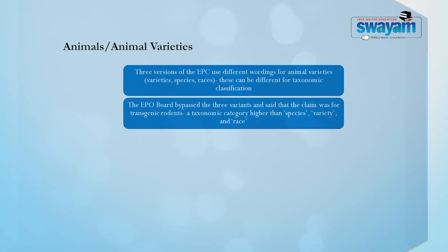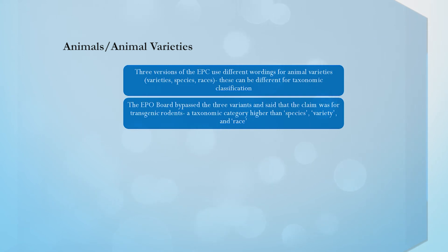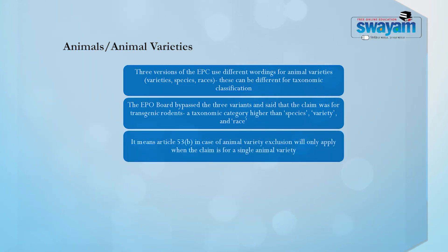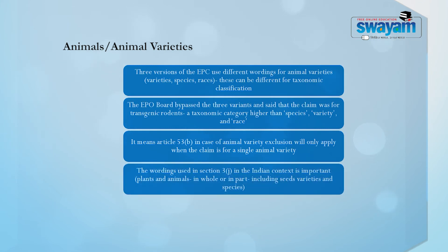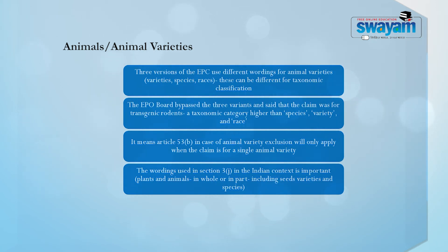The EPO board bypassed the three variants and said that the claim was for transgenic rodents and not for something that was natural — a taxonomic category higher than species, varieties and race. It means Article 53(b) in the case of animal variety exclusion will only apply when the claim is for a single animal variety. The wording used in the Indian context, as we shall see in section 3(j), is important because plants and animals in whole and part including seeds, varieties and species are excluded from the act, and we shall see what can be the consequences of applying this decision in the Indian context.